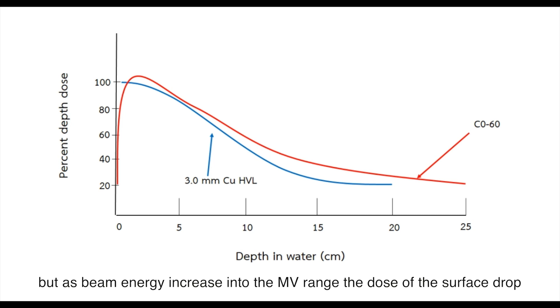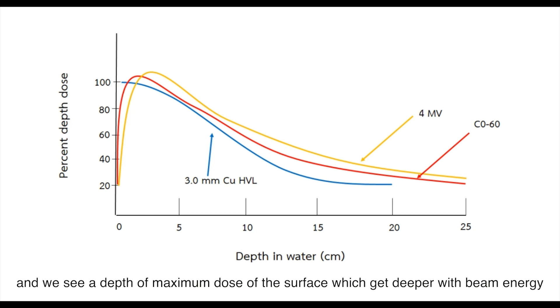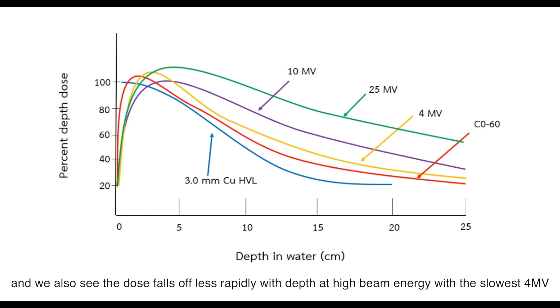But as beam energy increases into the megavoltage range, the dose at the surface drops and we see a depth of maximum dose beyond the surface which gets deeper with beam energy. We also see the dose falls off less rapidly with depth at higher beam energies with a slower rate for megavoltage.